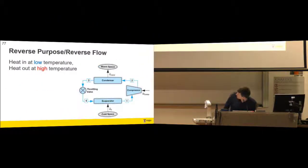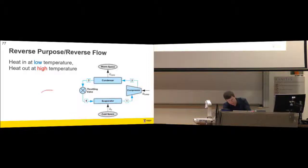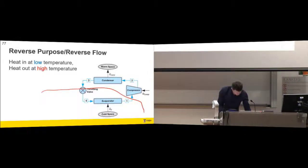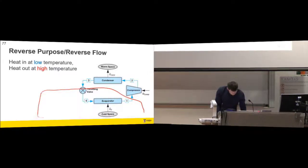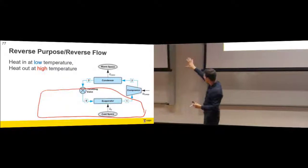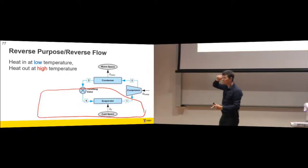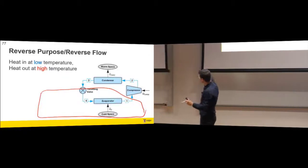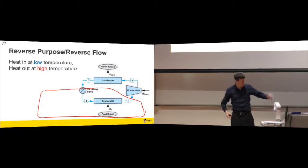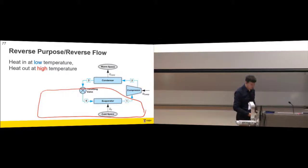This is what the cycle looks like - the fridge sits in there, the cold space. One should close the door on the fridge. So in the cold space it's drawing heat in. We've got the throttling valve. You'll see the arrows in this case are pointing anti-clockwise - that's quite deliberate. Other cycles we've looked at have gone clockwise.